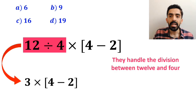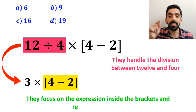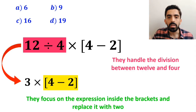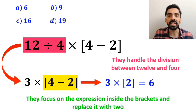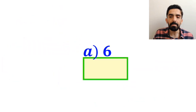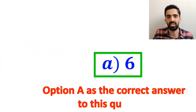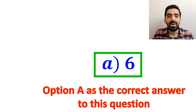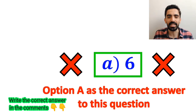In the final step, they focus on the expression inside the brackets and replace it with 2. So this expression becomes 3 multiplied by 2, which equals 6. Then they quickly look at the options and choose option A as the correct answer. But I have to say, we were tricked and it's not the correct answer to this question.